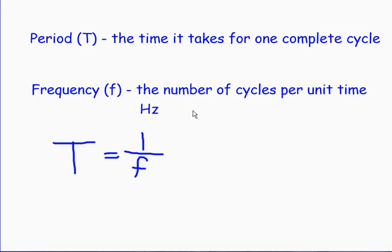If you're trying to calculate frequency, you plug in the number of cycles and divide by the time it takes for that number of cycles. To find period, that would be the time divided by the number of cycles. T is equal to 1 over f, so period is equal to 1 divided by frequency. The longer the period, the lower the frequency is going to be.